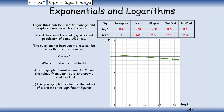We're going to use the graph to estimate the values of a and n to two significant figures. To do this, we rearrange p equals a times r to the power of n into the form y equals mx plus c.